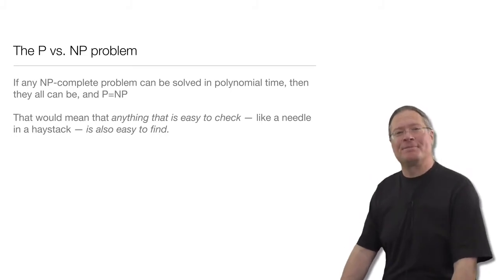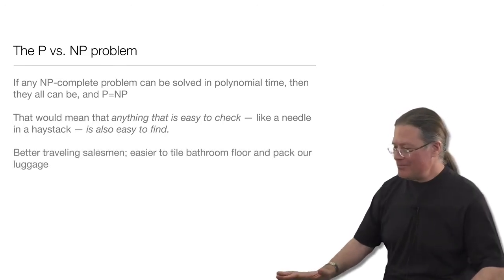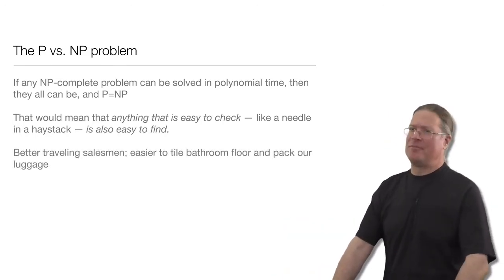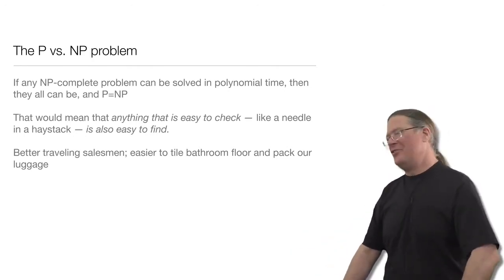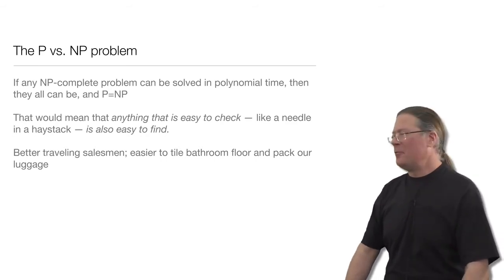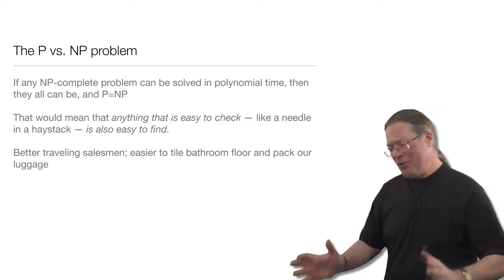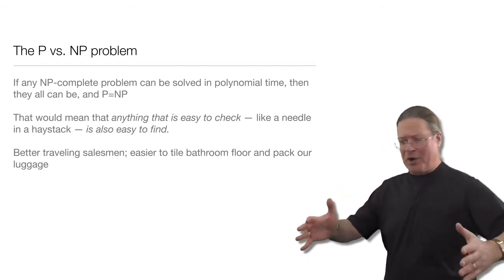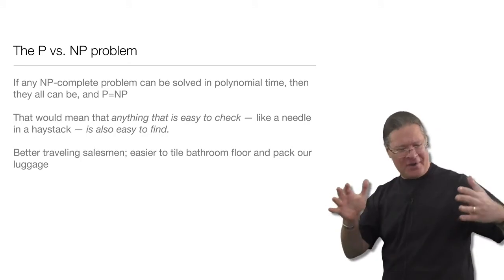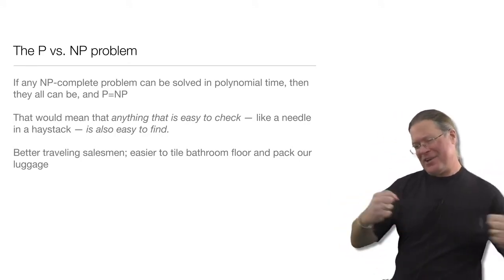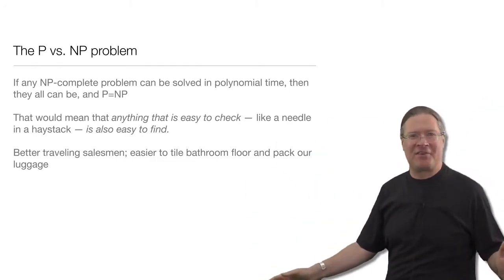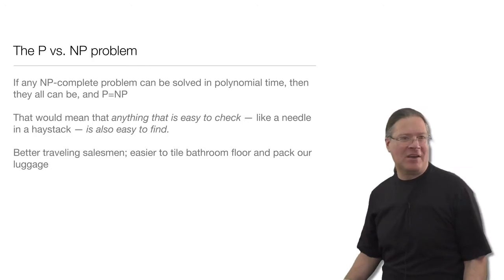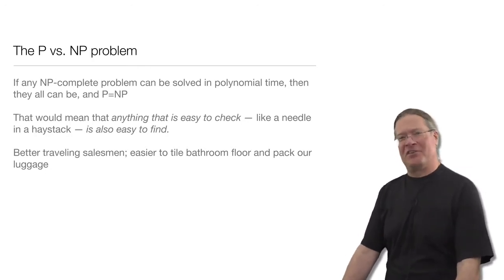This question is still open. Let's think a little bit about what would happen if P and NP were the same. Traveling salesmen would have much better routes. It would be much easier to tile your bathroom floor. Jigsaw puzzles would be really easy. It would be much easier to pack your luggage in your car — you wouldn't get stuck in a local optimum where you've packed almost all the luggage and there's one suitcase still out on the driveway and you can't see how to fit it in. But there are some other stranger consequences as well.